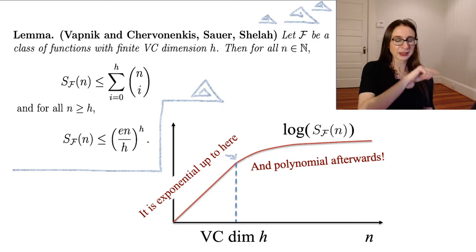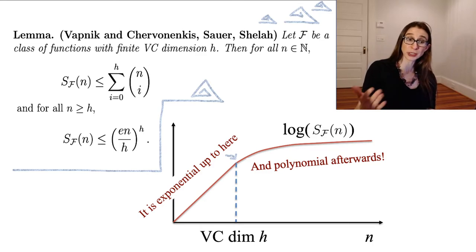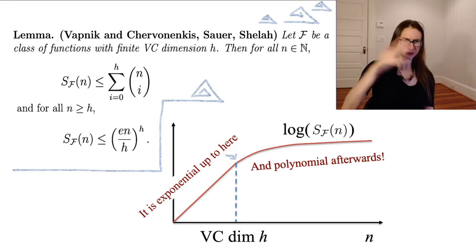And then the other, the more interesting bound is the lower bound, the one over here, right there. And that bound says that when N is greater than or equal to H, which is, that's the situation we're usually in. We usually have more data points than we can shatter with functions from the class, right?